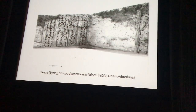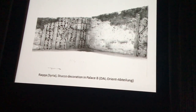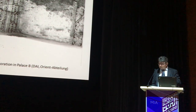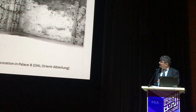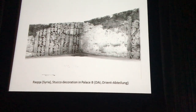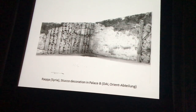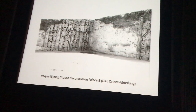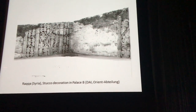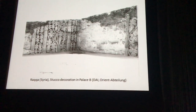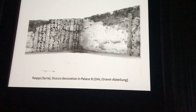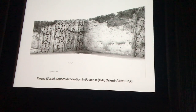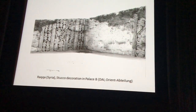Here is one example from Raqqa, from the palaces from the period of Harun al-Rashid, around 800 AD, in which we can see the vine leaves, the five-petal leaves, in a very similar shape as we have just seen in Samara, while other leaves are more elongated, but the whole treatment of forms is similar. You will also note the rows of pierced beads that accompany the bands of the vegetable ornament here.